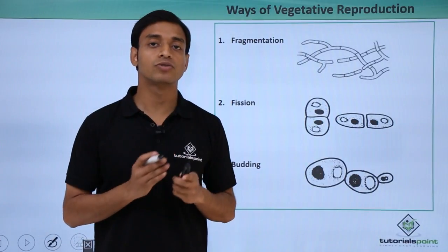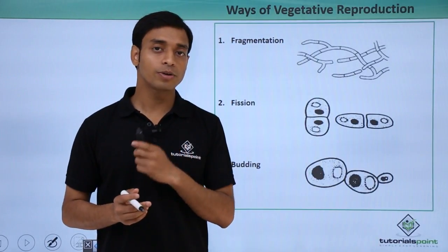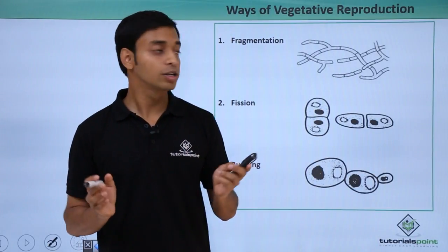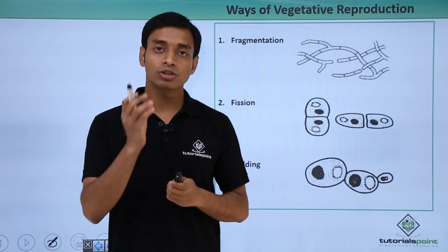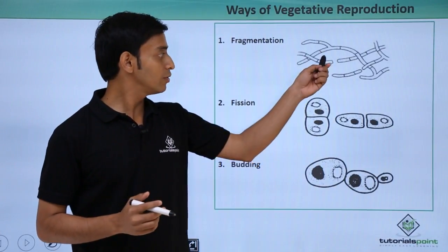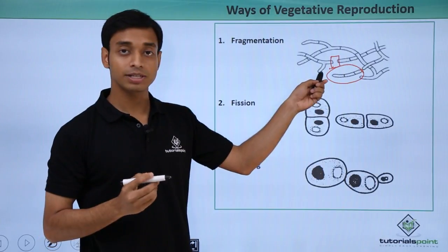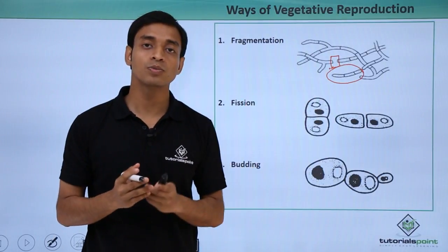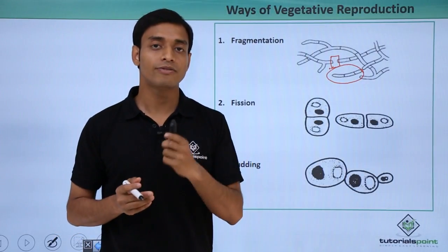Now let us discuss the fragmentation method of vegetative reproduction. From the name we can understand that fragmentation means dividing into smaller parts. Here you can see the hyphae break into smaller fragments. These smaller fragments can give rise to individual mycelium or hyphae. Each fragment grows and matures to give rise to new mycelium or new hyphae. This is vegetative reproduction by fragmentation.